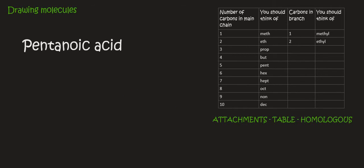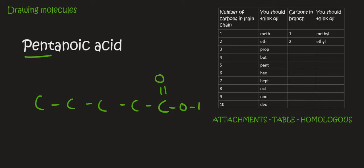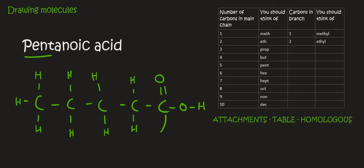Here we have pentanoic acid — that's a carboxylic acid with 5 carbons. So we just go 1, 2, 3, 4, 5. Then we know that a carboxylic acid has a double bond oxygen with an OH. The rest is just hydrogen. Notice I don't put a hydrogen here — the reason is that carbon is already got 1, 2, 3, 4 bonds.